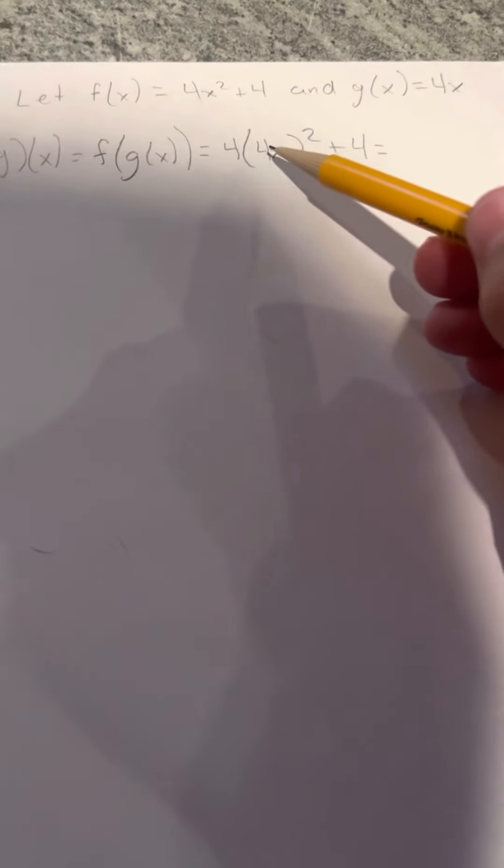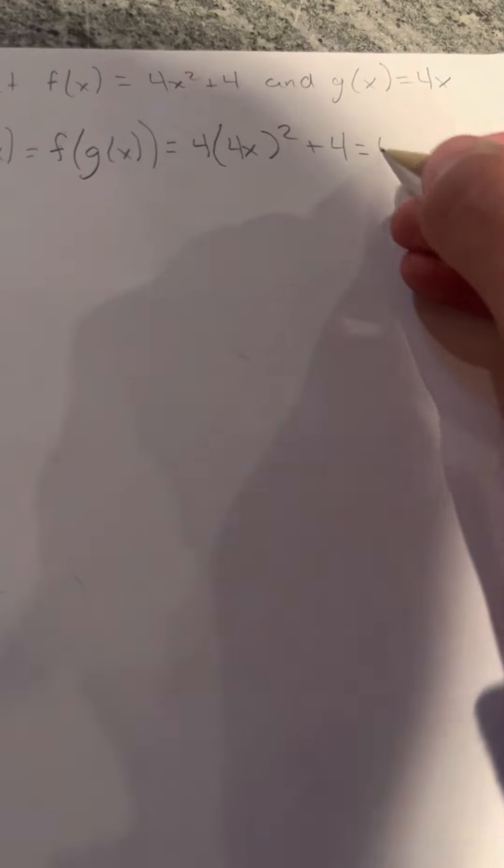Now you just distribute. 4 squared is 16, so it's basically 4 times 16, which is 64. Then you have x squared, so it would be 64x squared. Then you have plus 4. And that's our answer to f∘g.